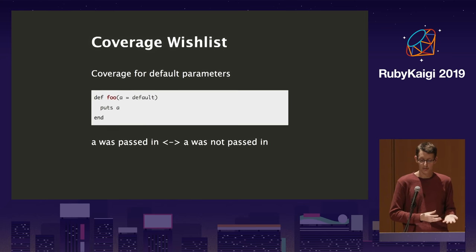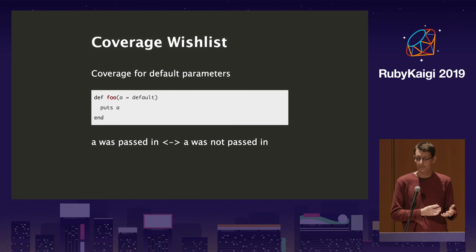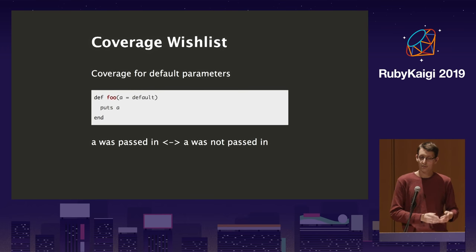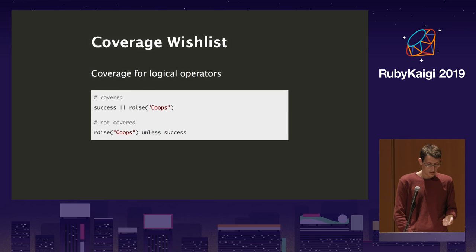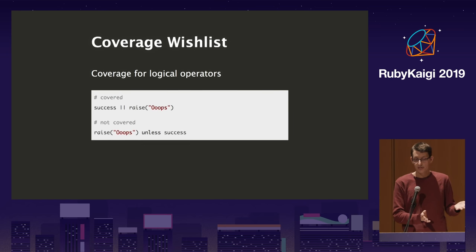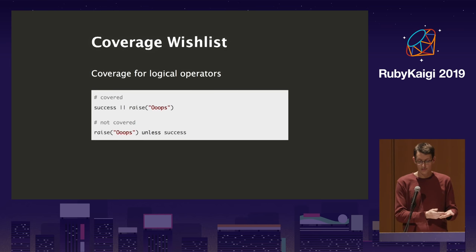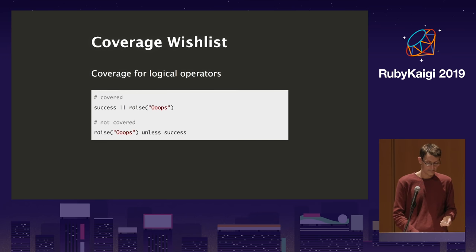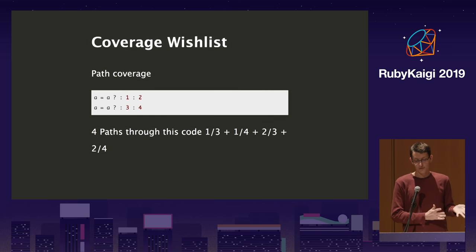Coverage for Boolean operators would also be great — knowing you hit all the cases. For example, you could have 10 to 20 conditions in a long Boolean expression that you just check, but there's no code coverage for each individual part. You just know the Boolean condition was hit once. It would be nice to have an option to break this down and say 'you don't need this condition because that case never happens' — maybe it duplicates something earlier or is impossible to hit.